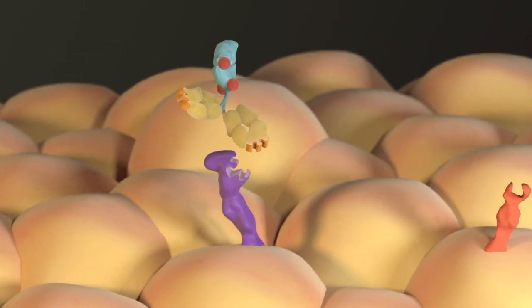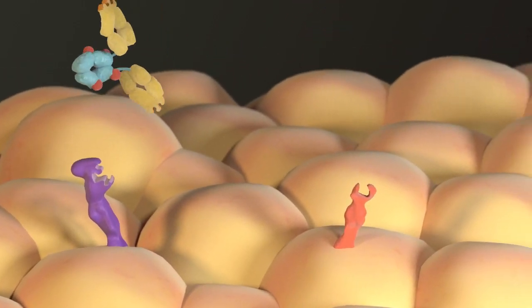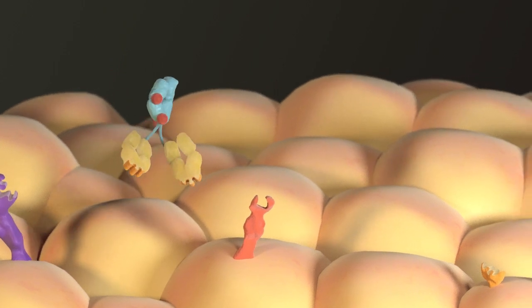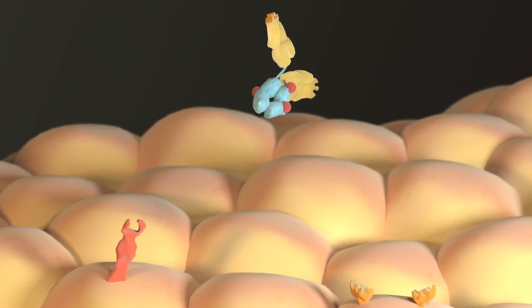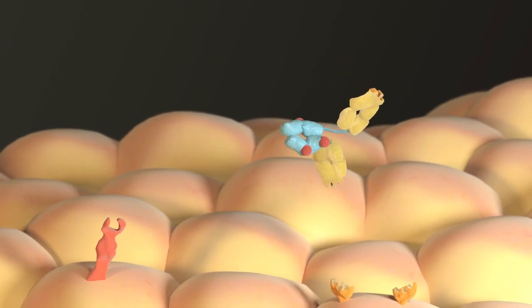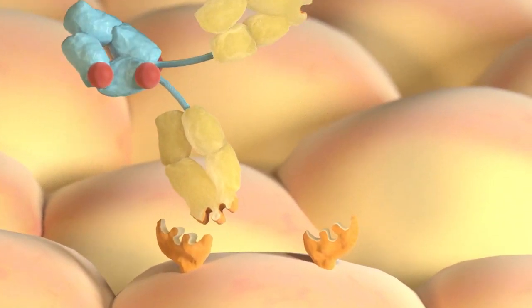Antibodies are Y-shaped molecules that attach tightly to a target. They're very specific, meaning that each antibody attaches to only one target. An antibody and its target fit together like pieces of a puzzle.